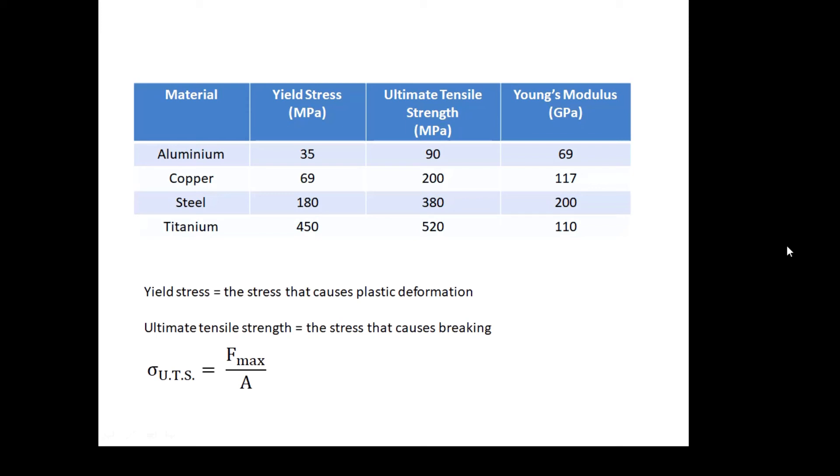I've got two other quantities there. I've got the yield stress—that's the stress which causes plastic deformation, so it's never going to return back to its original length. The stress that causes plastic deformation is the yield stress. And then the ultimate tensile strength is the stress that causes breaking.